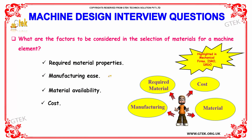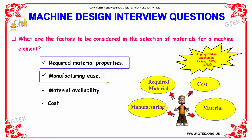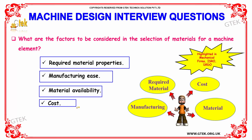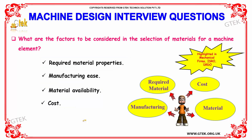What are the factors to be considered in the selection of materials for a machine element? The factors are: required material properties, manufacturing ease, material availability, and cost.